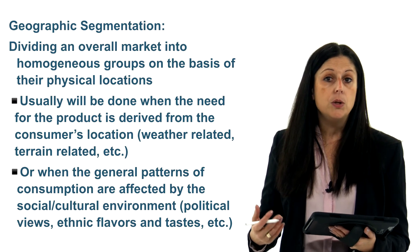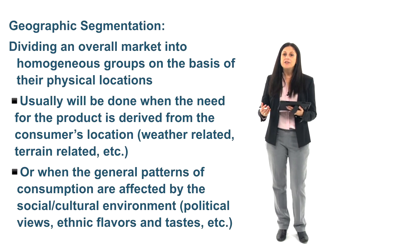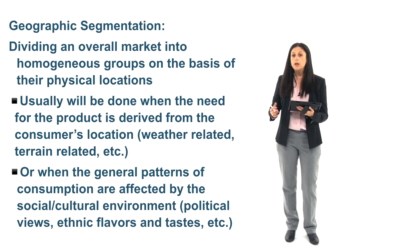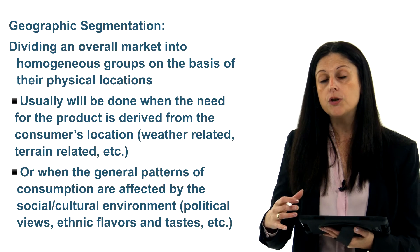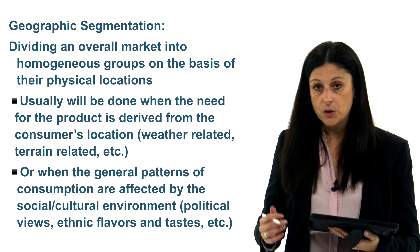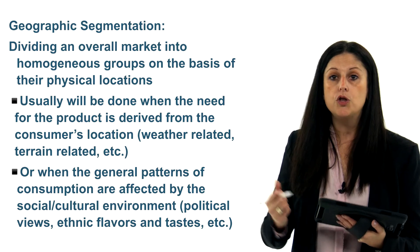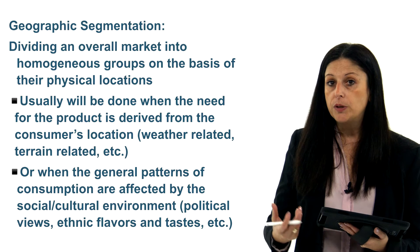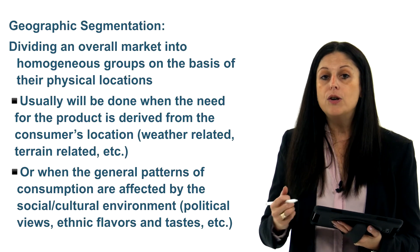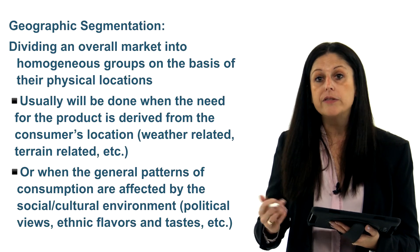The general pattern of consumption might also be affected by the social or cultural environment, like political views or ethnic flavors. It's not always directly related to geographical location, but occasionally subcultures are concentrated within a geographical area. For example, in Florida there's a greater concentration of Hispanic population that might prefer spicier potato chips compared to the East Coast. So we might divide the United States based on what types of chip flavors will sell by geographical location — not because Florida causes people to like spicy food, but because of the demographic concentration of people living there.